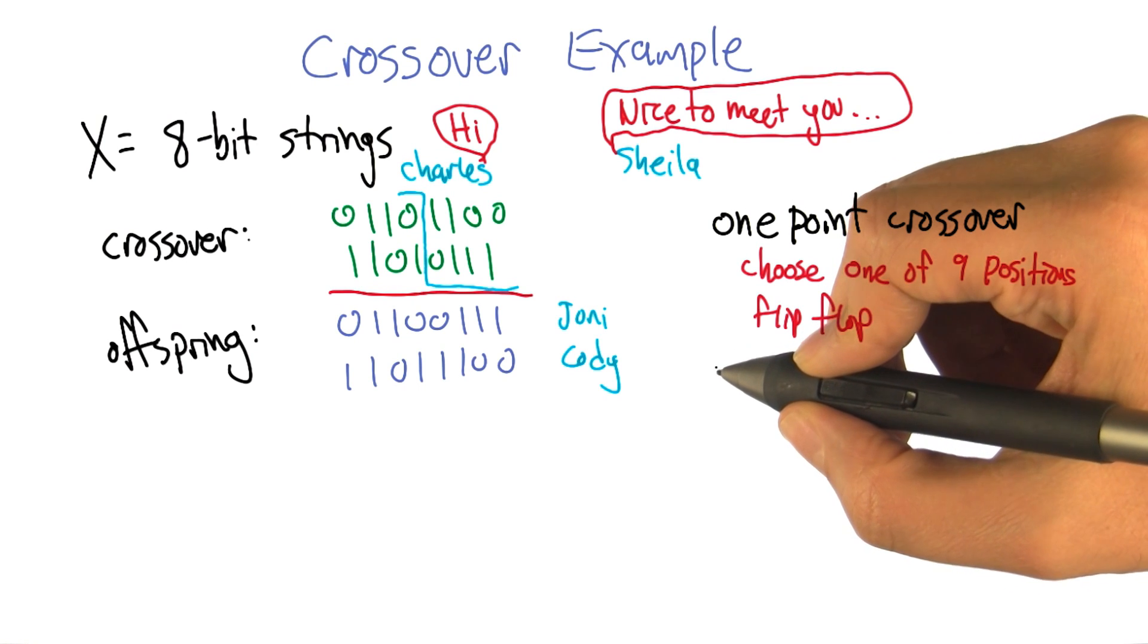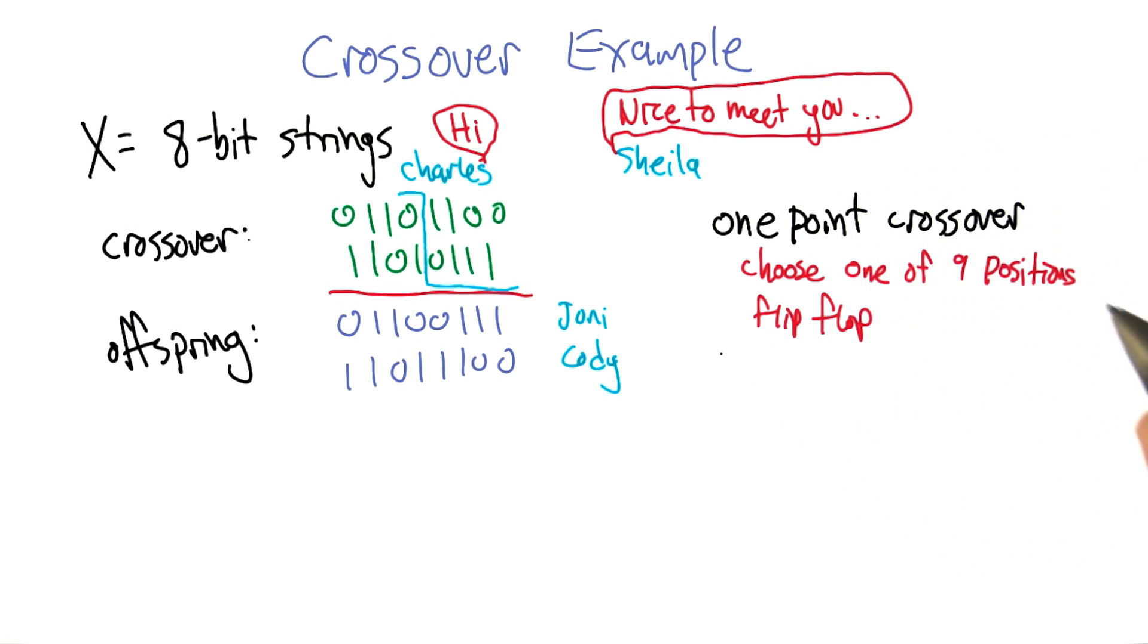Good. Right? So by picking halfway through, you're saying the first four bits are somehow related, and the last four bits are somehow related. Because otherwise, it wouldn't make any sense to talk about them being together.